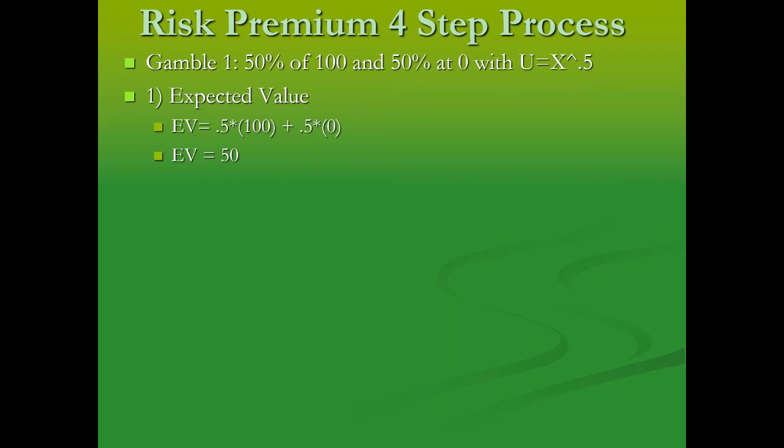In this case, we multiply 0.5 times 100 and 0.5 times 0. The expected value is 50.